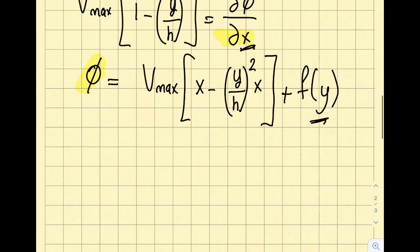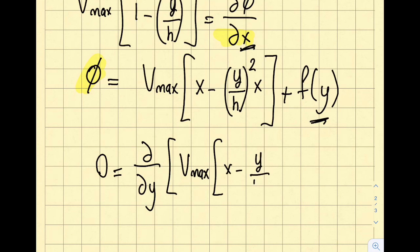My v, which is zero, is del/del y of the velocity potential, which is V max times x minus y over h squared times x plus f of y. Seems like a long equation. Let's go ahead and calculate this.